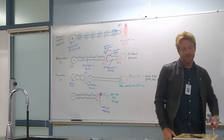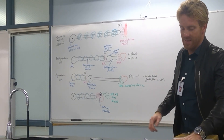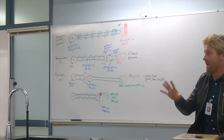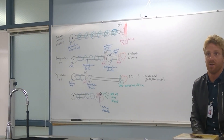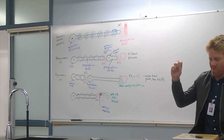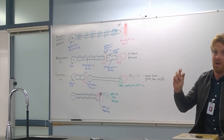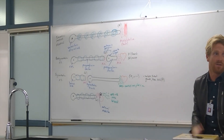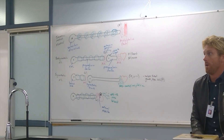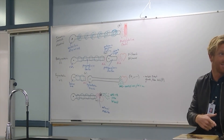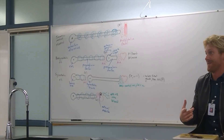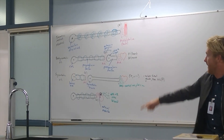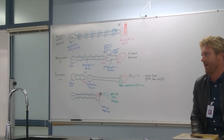Most organs in the body are innervated by both sympathetic and parasympathetic — like the heart, where parasympathetic slows it down and sympathetic speeds it up. But a couple of organs are only innervated by the sympathetic system with no parasympathetic innervation: blood vessels, sweat glands, and the adrenal medulla. The parasympathetic system has no effect on those organs — sweating is purely sympathetic control.